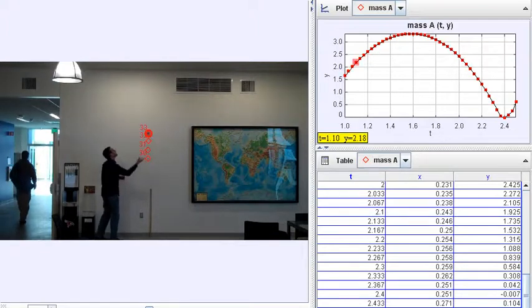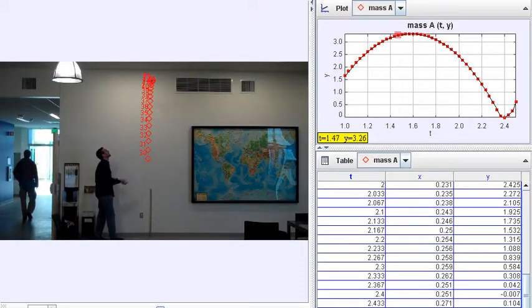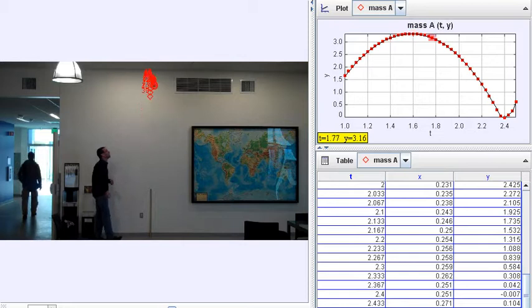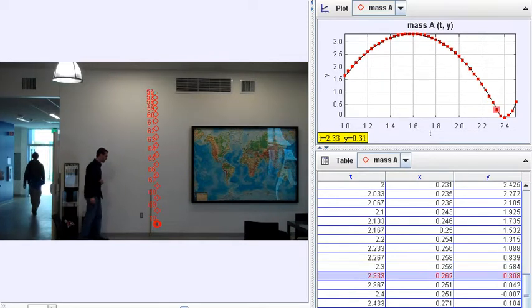And then we start tracking, and notice our Y value is increasing and then decreasing over time. And it looks like it's taking about 2.4 seconds to be released here.